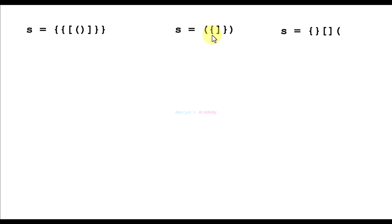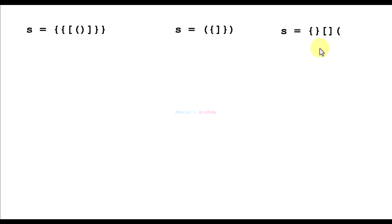Next, here we have open parenthesis, open curly brace, and then a closed square bracket — but this string doesn't contain any open square bracket, so this is not a valid string. Then here we have another string: open curly brace, closed curly brace, open square bracket, closed square bracket, open parenthesis — but there is no closing parenthesis, so it is also not a valid string.